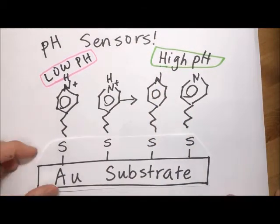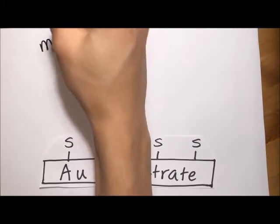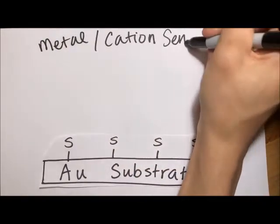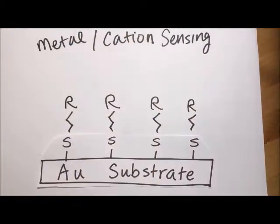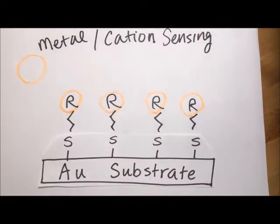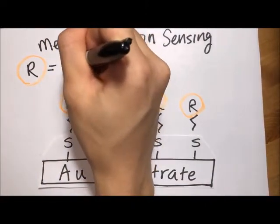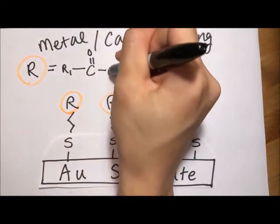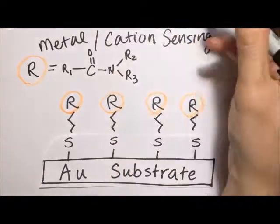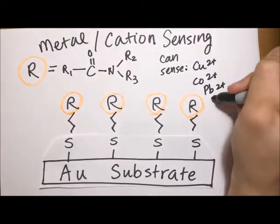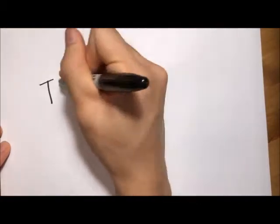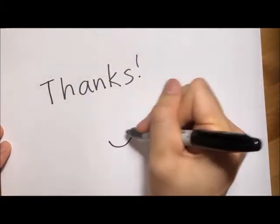And finally, another sensor that can be created using SAMs is a metal cation sensor, where researchers have attached amide groups to the ends of SAMs to detect the binding of metal cations, such as copper, cobalt, or even lead. And there are just so many more applications with tons of combinations of head groups, tails, and functional groups. It all just depends on what your application is.